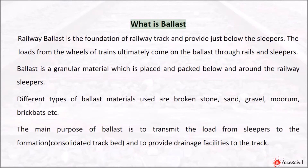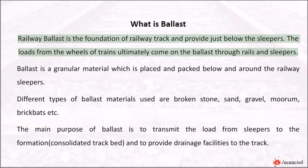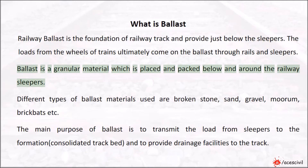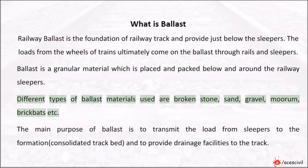What is ballast? Railway ballast is the foundation of railway track and is provided just below the sleepers. The loads from the wheels of trains ultimately come on the ballast through rails and sleepers. Ballast is a granular material which is placed and packed below and around the railway sleepers.